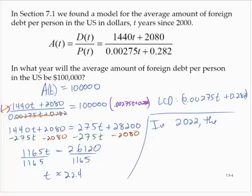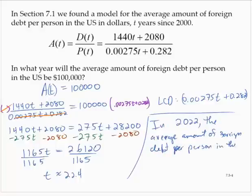the average amount of foreign debt per person in the US will be $100,000. So with that number, the average amount of foreign debt